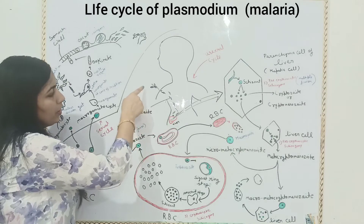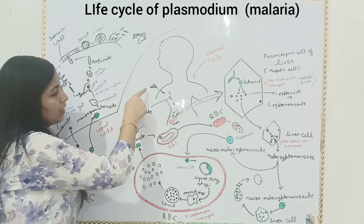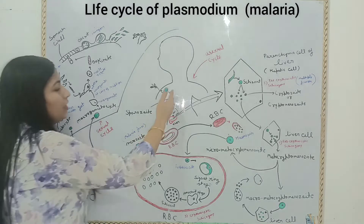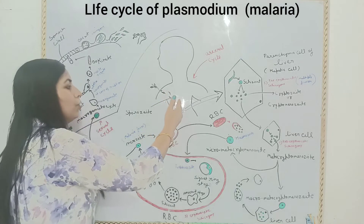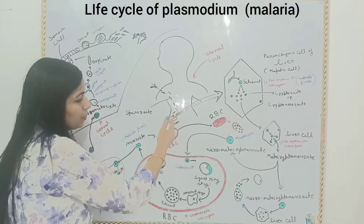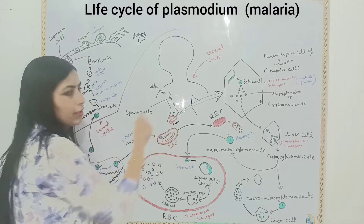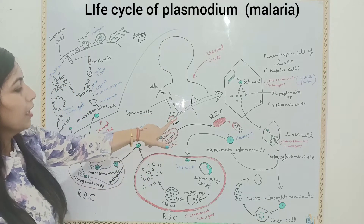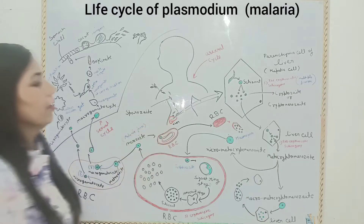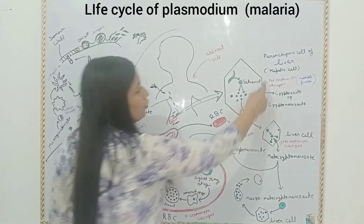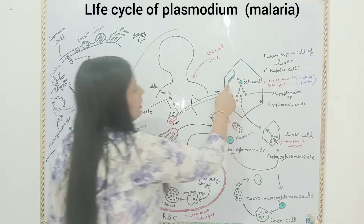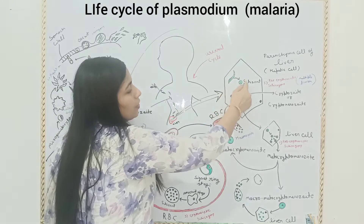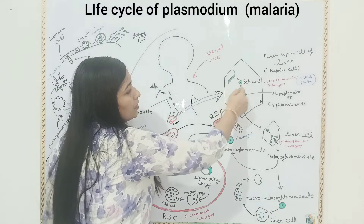Here, the Anopheles mosquito is a vector. When these sporozoites enter into the human body, they go into the liver. When sporozoites enter the liver cell, which is also known as the hepatic cell, it covers this structure and changes into a rounded cell structure.